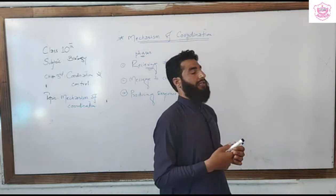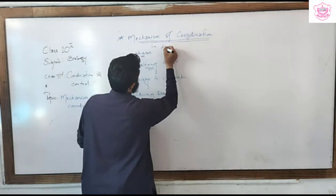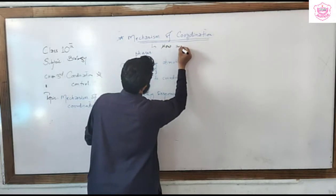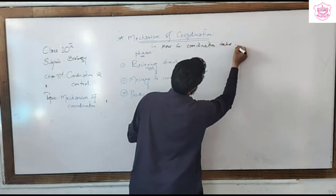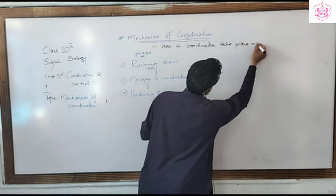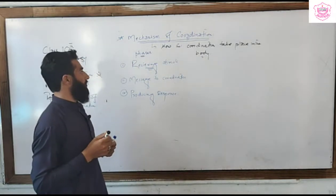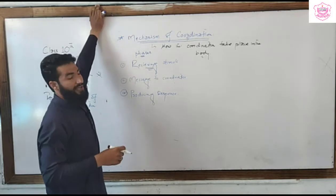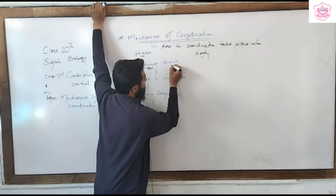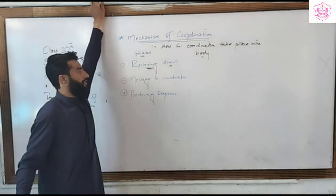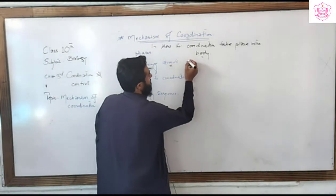Today we discuss about the mechanism of coordination — how coordination takes place in the body, or how a normal function is performed. Normal coordination takes place in three phases or steps. The first phase is receiving stimuli. Any change that takes place in the environment which initiates a response in the body is called stimuli or stimulus. The singular form is stimulus.